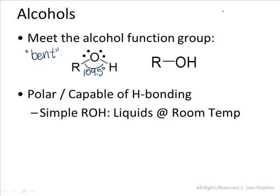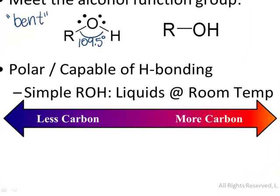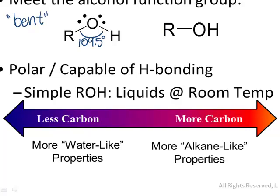One thing we will have to consider is that there's a great deal of variability in what the R group is on an alcohol. We might be dealing with an R group that has just one carbon, or one that has dozens. As a result, there's variability in how alcohols behave, and that variability often depends on how many carbons are present. An alcohol with a very small R group — perhaps just one or two carbons — will tend to have more water-like properties, because the OH itself is very similar to what we find on the water molecule. However, if we expand that R group to have more and more carbons, at some point the carbon chain wins out and we have a more alkane-like molecule with alkane-like properties. This will have a very significant effect on things like solubility.